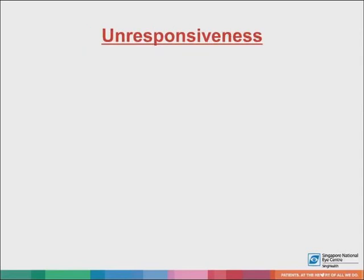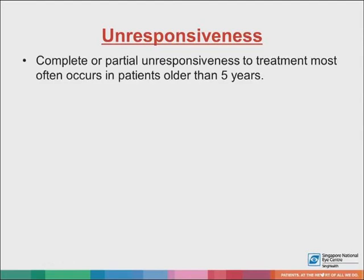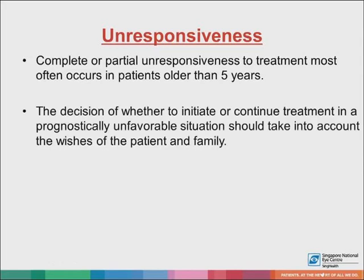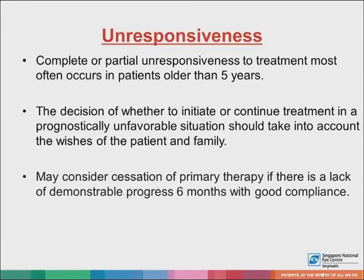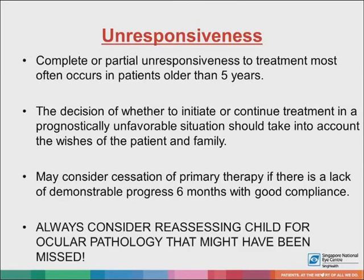There are some cases that, despite treatment, do not respond. This usually occurs more often in patients older than five years old. The decision whether to initiate or continue treatment in a prognostically unfavorable situation should take into account the parents' and the patient's wishes. If the family are willing, you may try harder by increasing the number of hours of patching, for example. However, if despite good compliance there is a lack of demonstrable progress, you may consider cessation. In these cases, always remember to reassess the child for any ocular pathology that might have been missed.